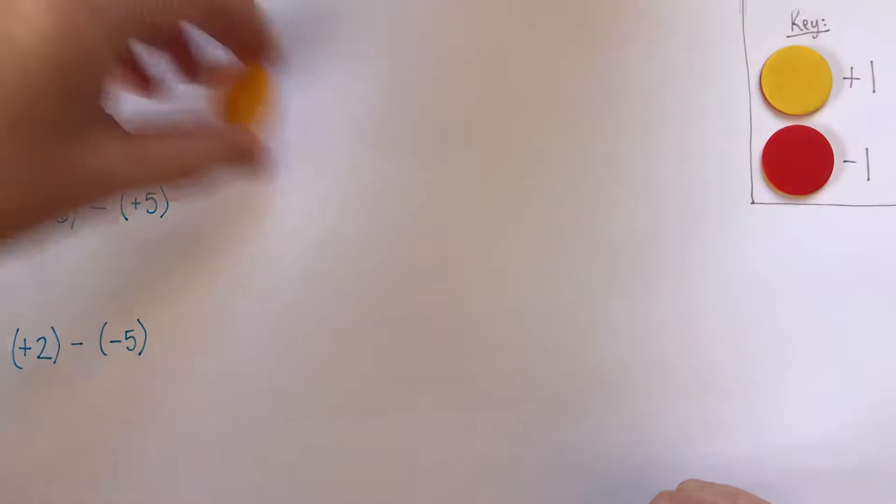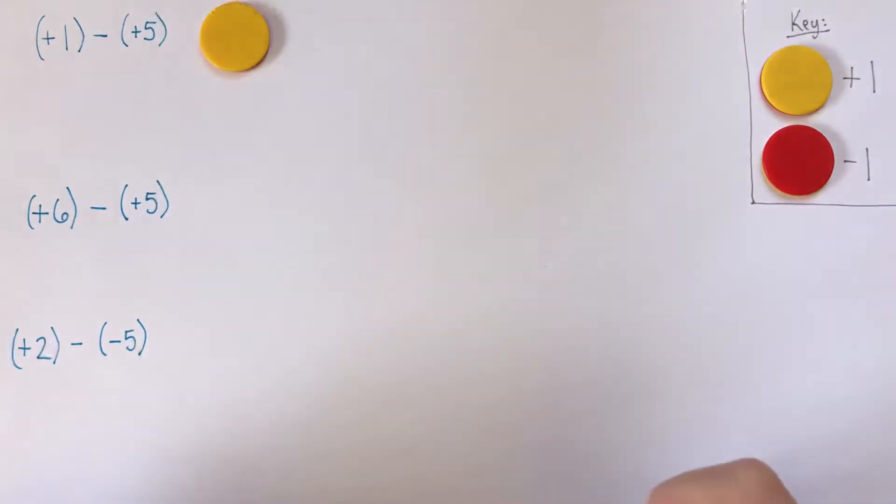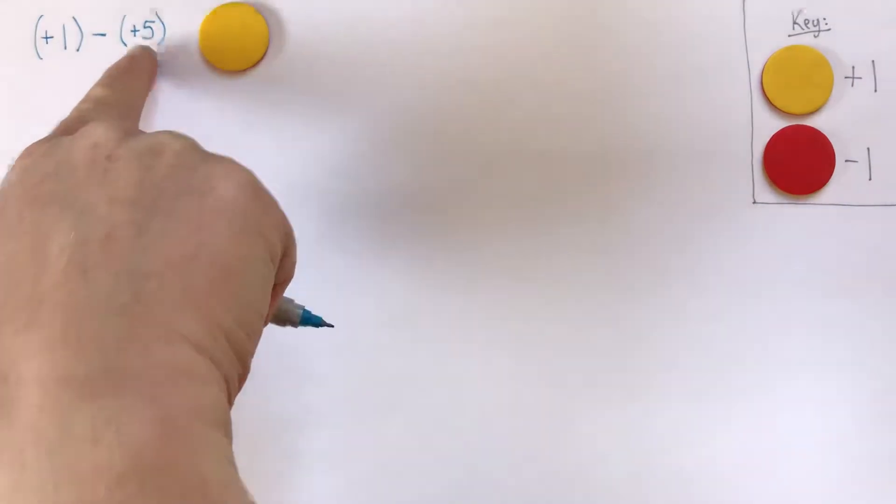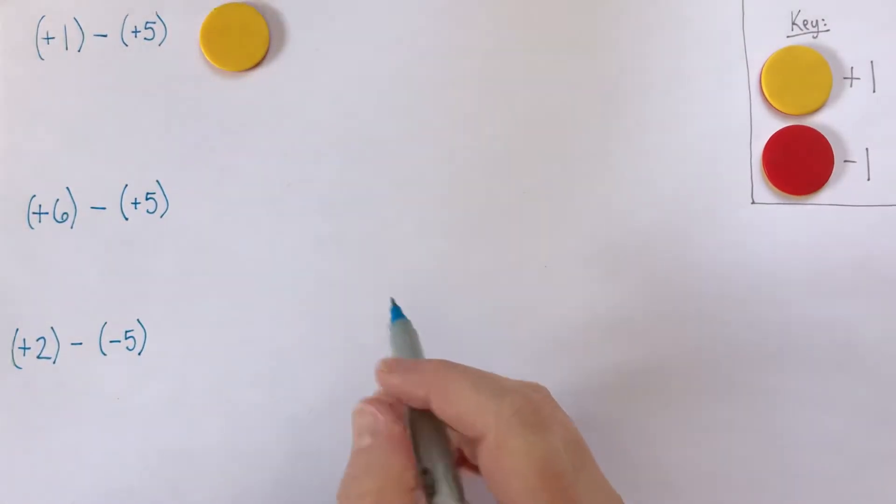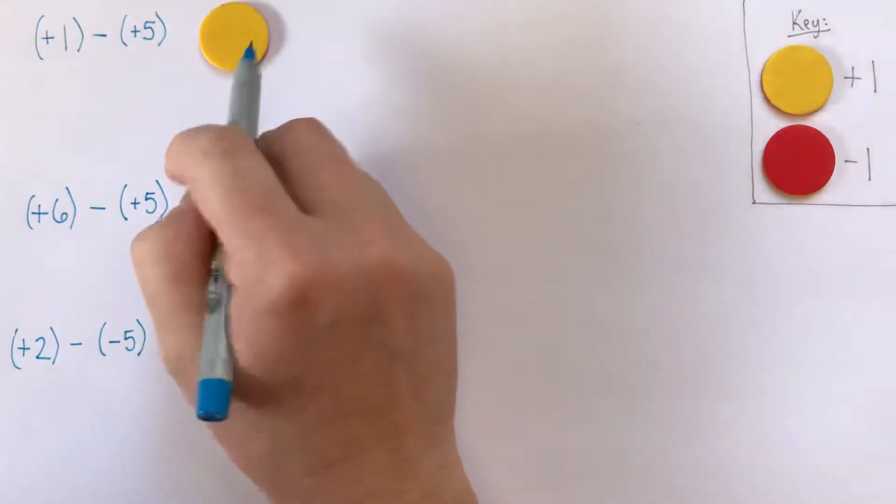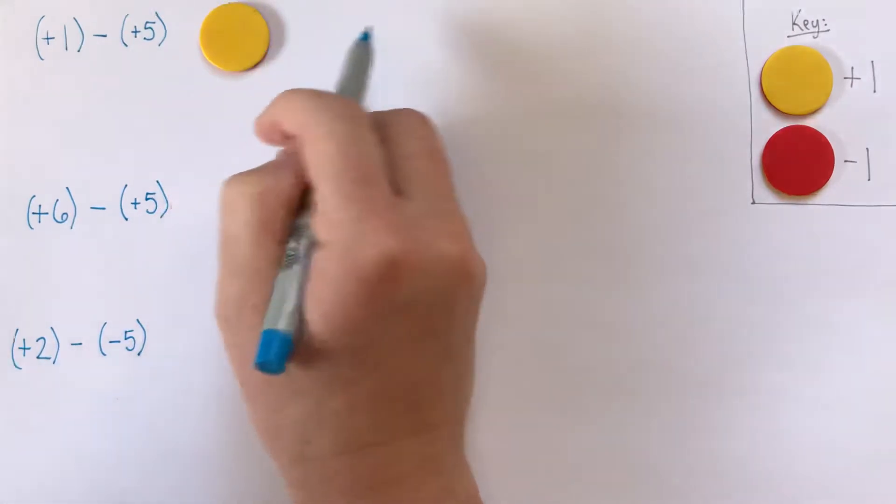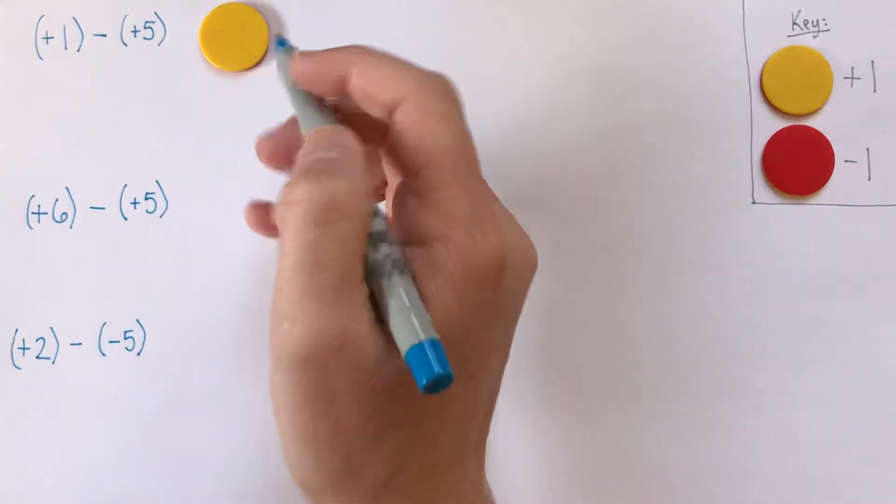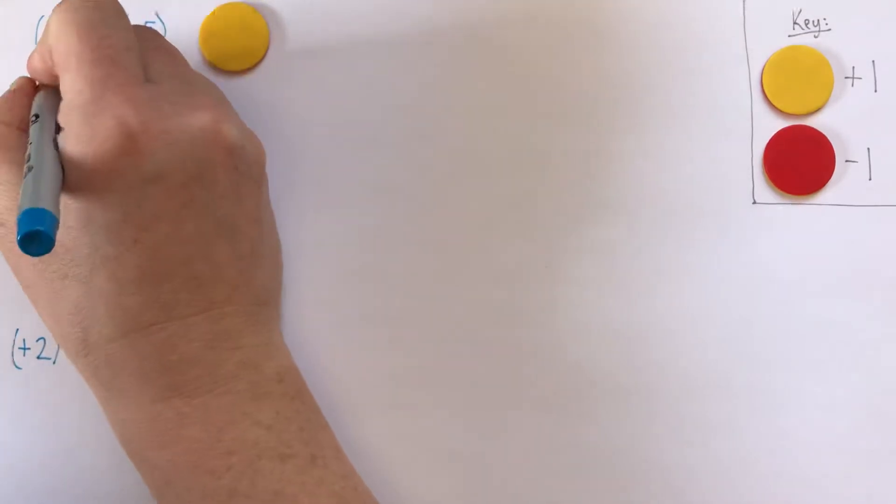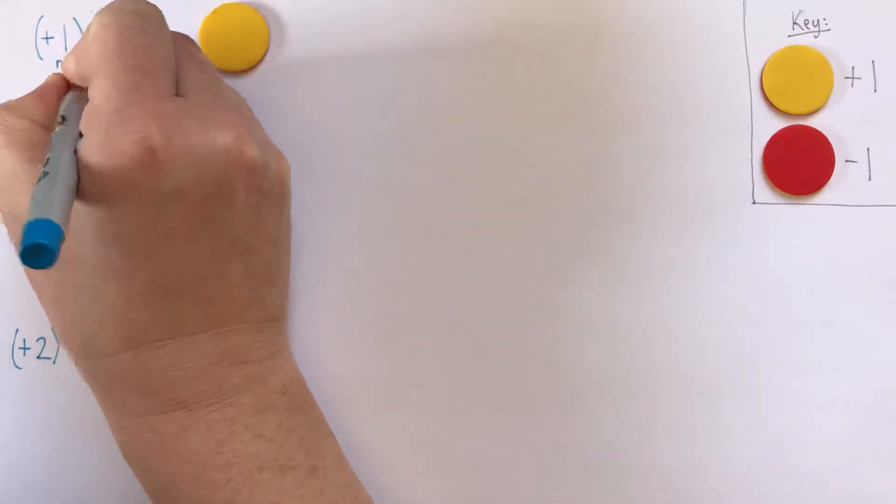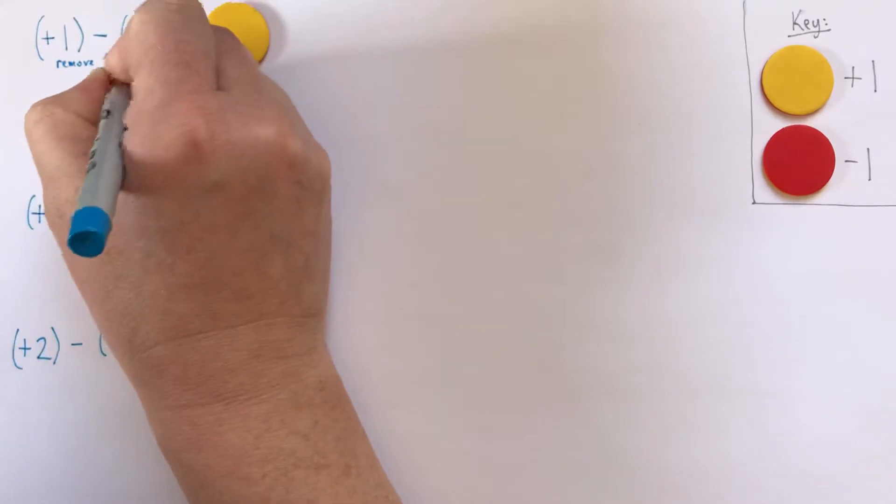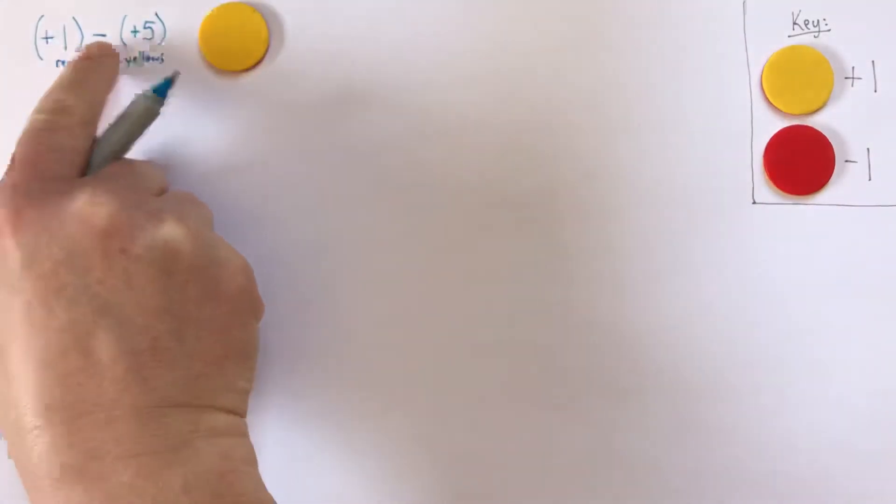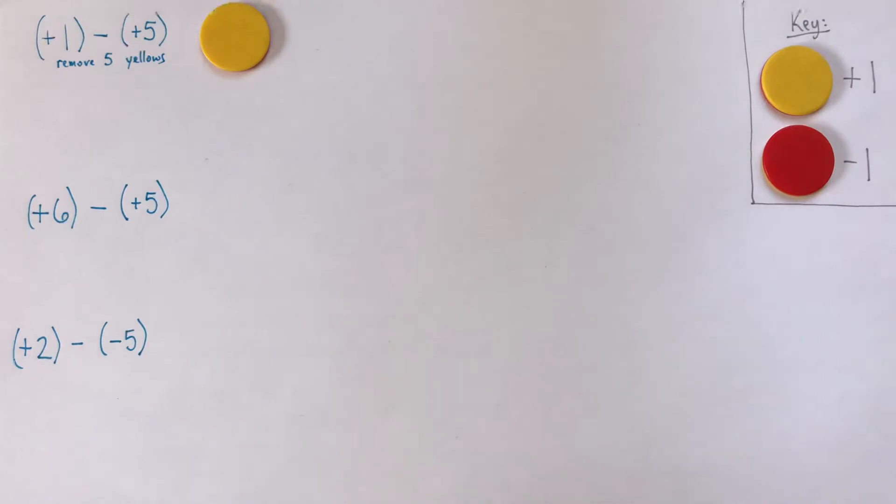Okay, so we'll start with positive 1, so that's one yellow. And we'd like to take away five yellows. Now, I can't do that. So sometimes it helps me stay organized, and as soon as I see that the question is going to need a different representation, I just write down what my goal is, which is to remove five yellows. That's what subtract positive 5 means when we're using counters like this. So what I need to do is I need to represent my positive 1 a different way, and to do that I'll think of zero pairs.